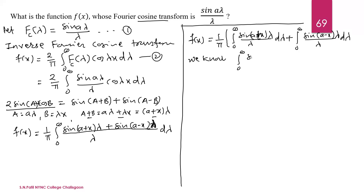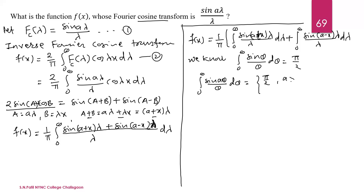We know the standard result: ∫₀^∞ sin(θ)/θ dθ = π/2. More generally, ∫₀^∞ sin(aθ)/θ dθ has two values depending on the sign of a: it equals π/2 when a is positive, and −π/2 when a is negative.